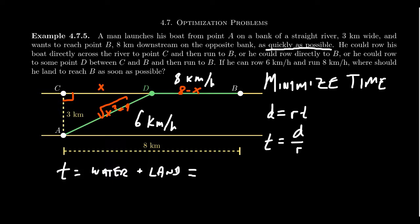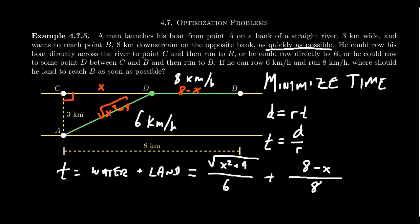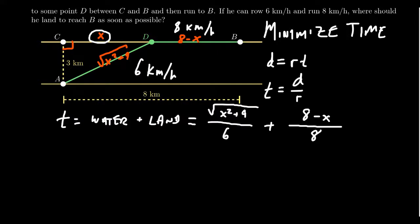If we look at the water time, there's the distance over the water, which we found was the square root of x squared plus 9 in kilometers, divided by his speed on the water, which was 6 kilometers per hour. Then there's the time he spends on land, the distance he spends on land is 8 minus x, and then he runs at 8 kilometers per hour. There might be other ways of setting this problem up. I did choose the variable x to try to simplify the forthcoming equation.